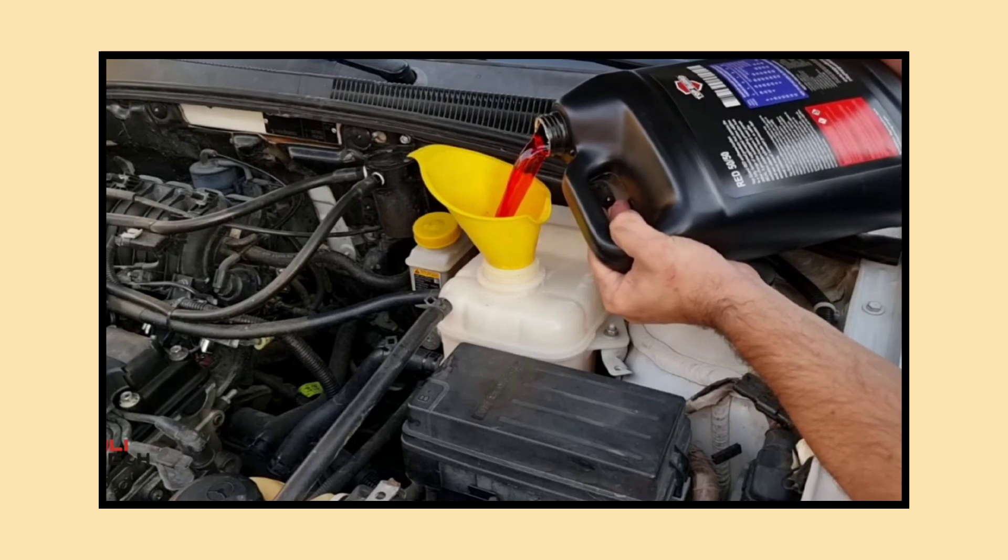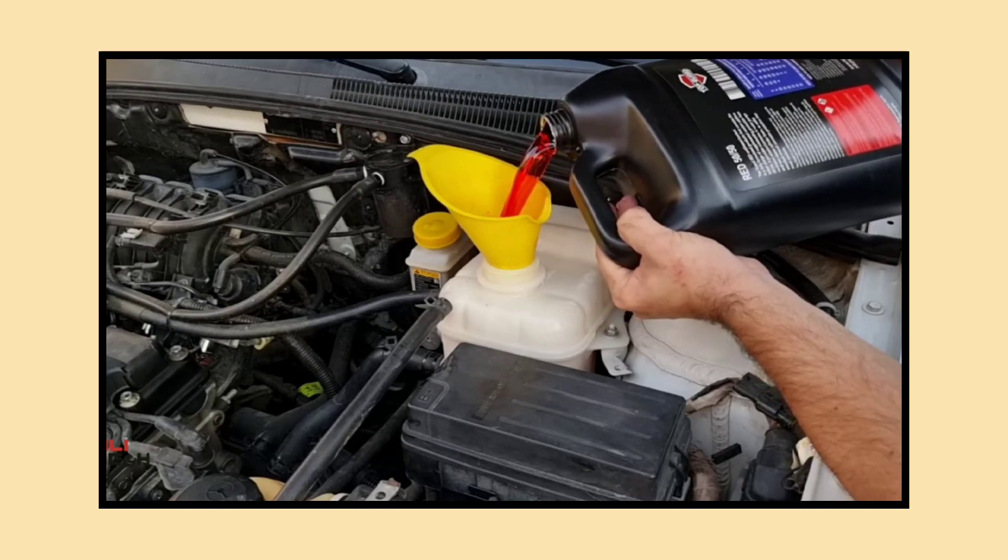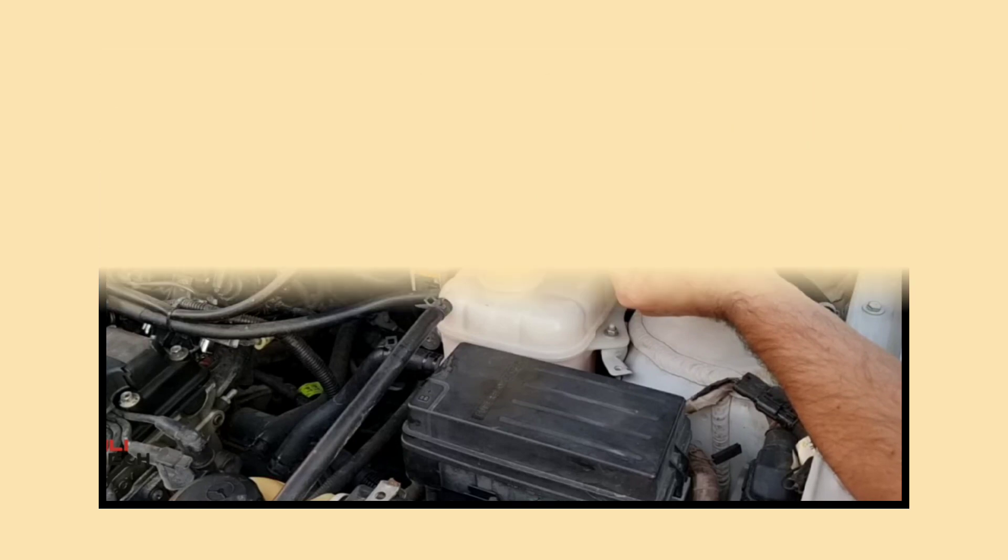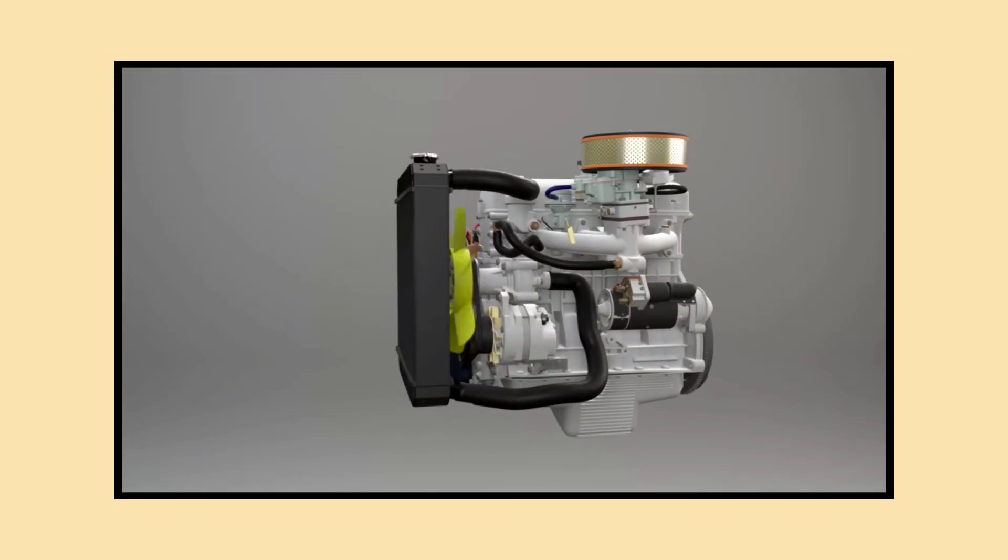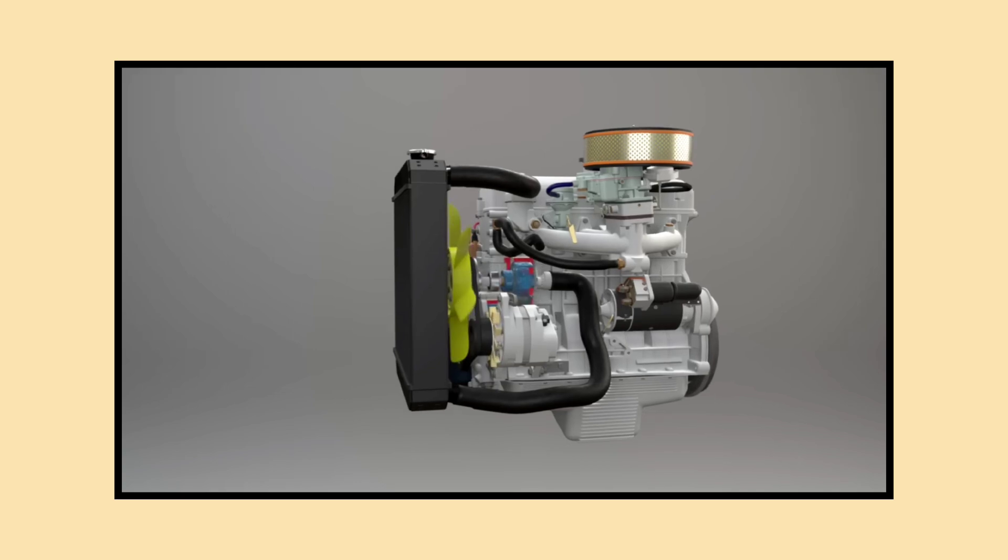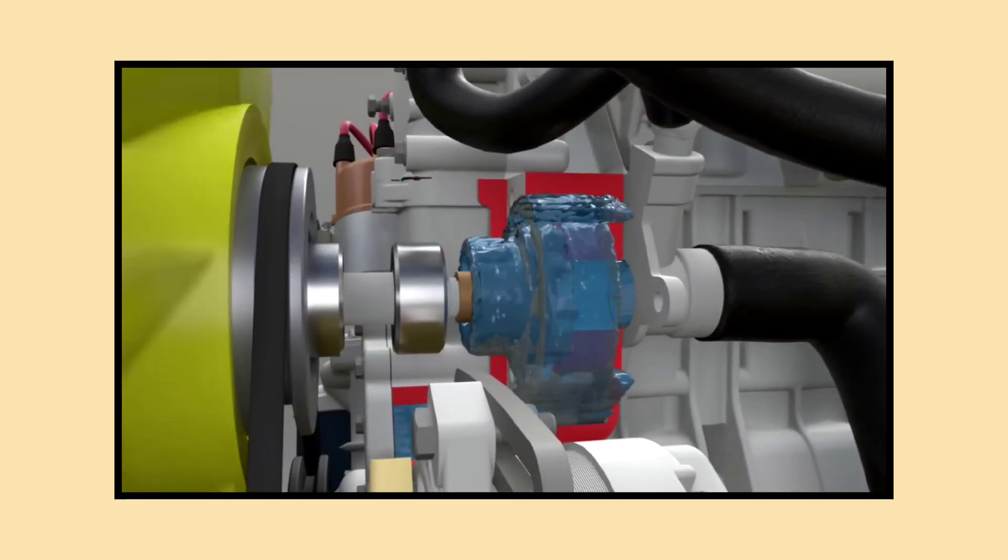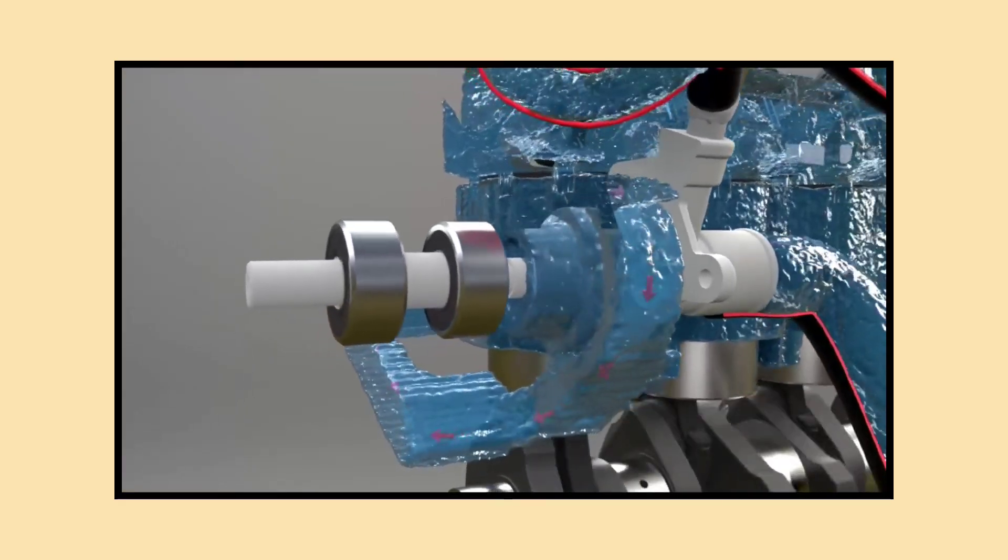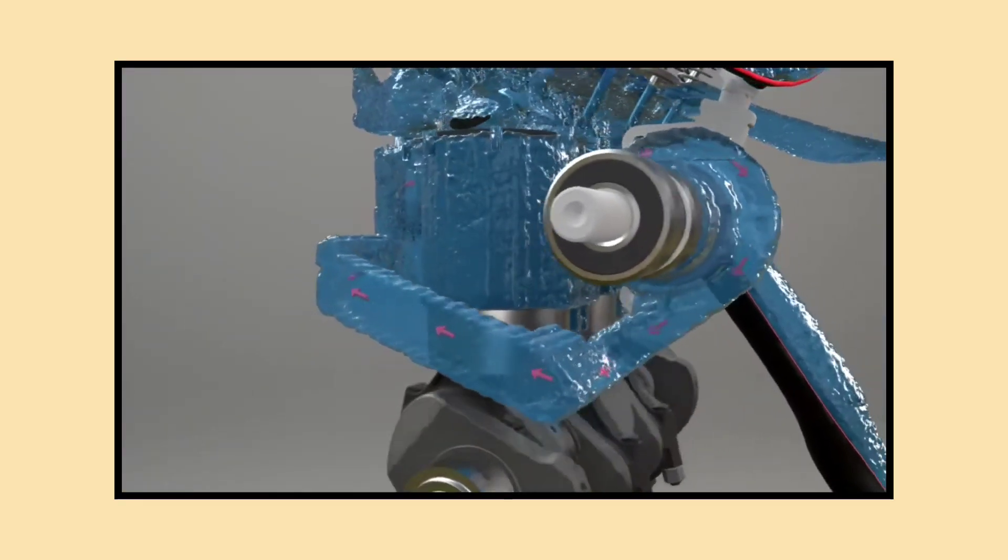To keep your radiator functioning well, it's important to regularly check coolant levels. Make sure to inspect the coolant reservoir and top it off if necessary. Flushing the system every 30,000 miles, or as recommended by your vehicle's manufacturer, helps remove debris and old coolant. Additionally, look for cracks or wear on the hoses and replace them if needed. Regular inspections for signs of leaks or corrosion can go a long way in maintaining radiator health.